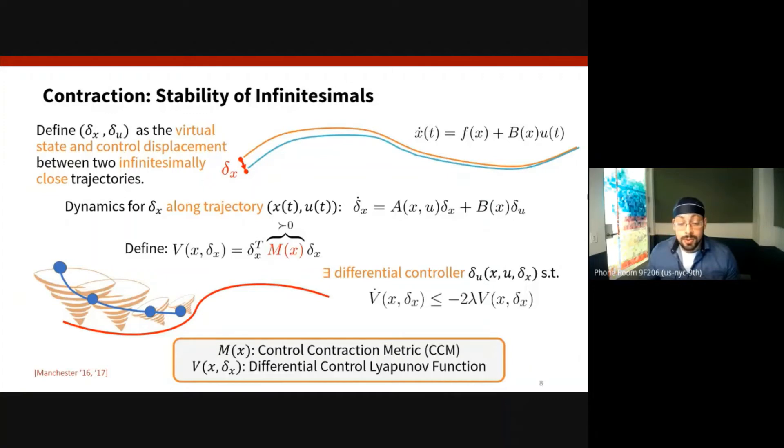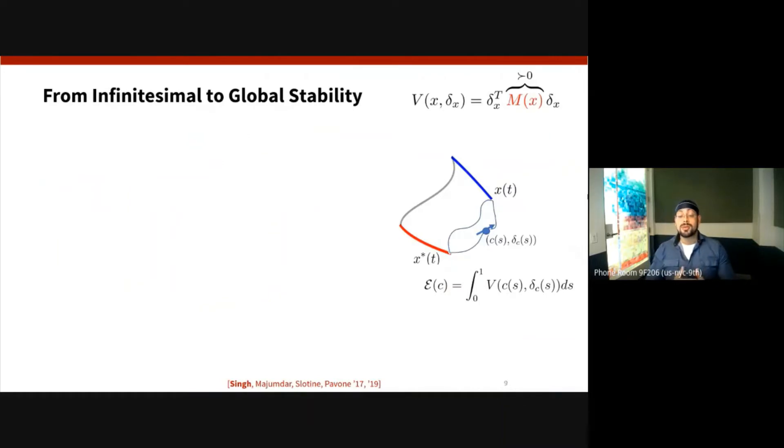So as we frequently do in contraction analysis, we start with stability on an infinitesimal scale and now we will use integration to derive stability results between two finitely apart pair of trajectories. Let's say x*(t) is the trajectory that we're trying to track and x(t) is the trajectory that we're currently following. At every single point in time we can imagine the set of all curves that connect x*(t) to x(t), and we will measure the length of these curves using this script E notation which we term as the energy of the curve.